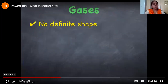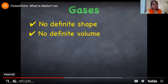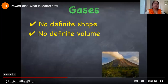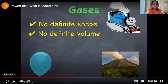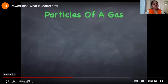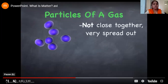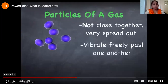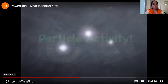Gases have no definite shape and no definite volume. This means they can take the shape wherever they find space, and so the volume also does not remain fixed. Examples are smoke coming out from an engine, gases coming out from a volcano, and gas filled in a balloon. Why does this happen? Because the particles of a gas are not close together — they are very spread out and vibrate freely past one another, so they can occupy any space.